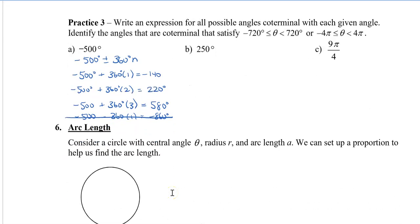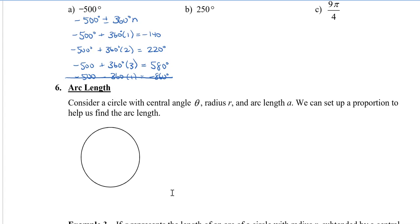All right, so next we're going to take a look at something called arc length. Arc length is trying to find the length of the arc which is located on the outside part or the circumference of the circle. So consider a circle. Let's say that we have a central angle and that central angle is θ. We're going to say that the radius is R and then let's say that we're trying to find this arc length and we'll call that A.